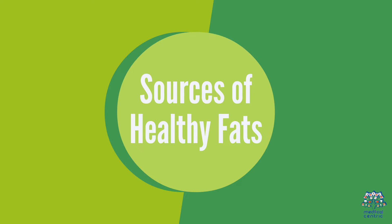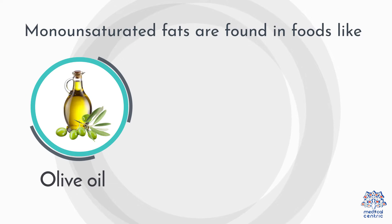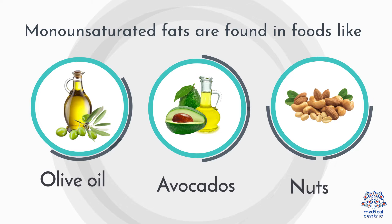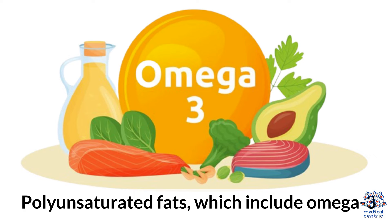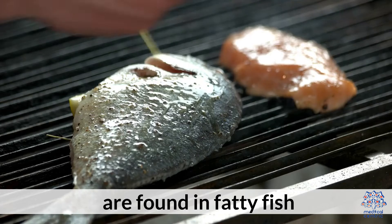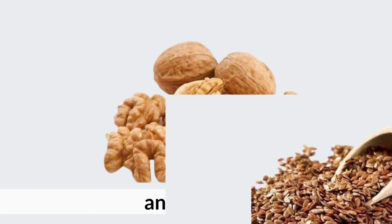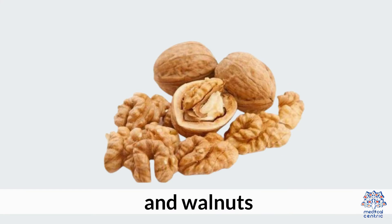Sources of Healthy Fats. Monounsaturated fats are found in foods like olive oil, avocados, and nuts. Polyunsaturated fats, which include omega-3 and omega-6 fatty acids, are found in fatty fish, flaxseeds, and walnuts.